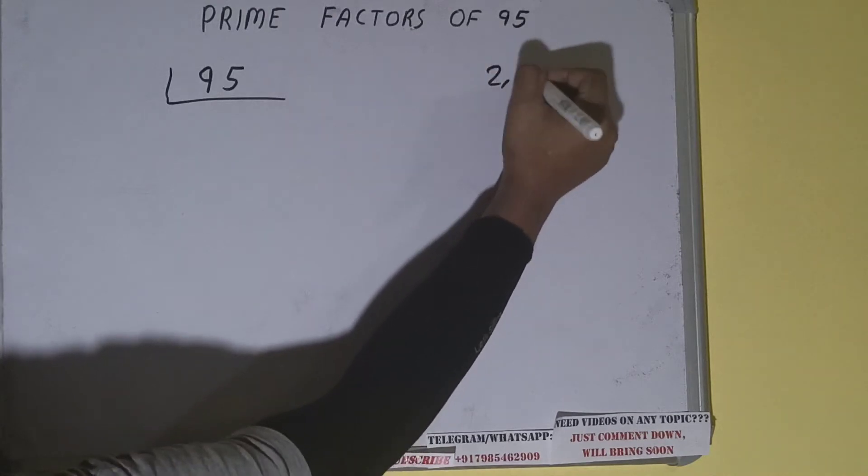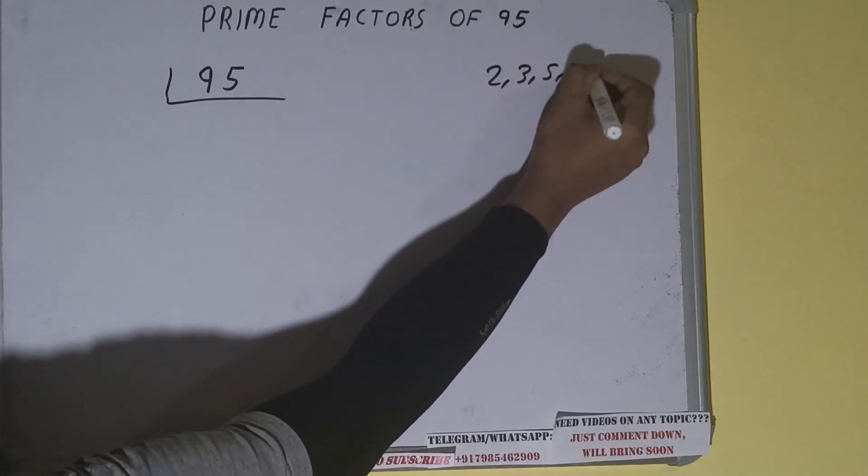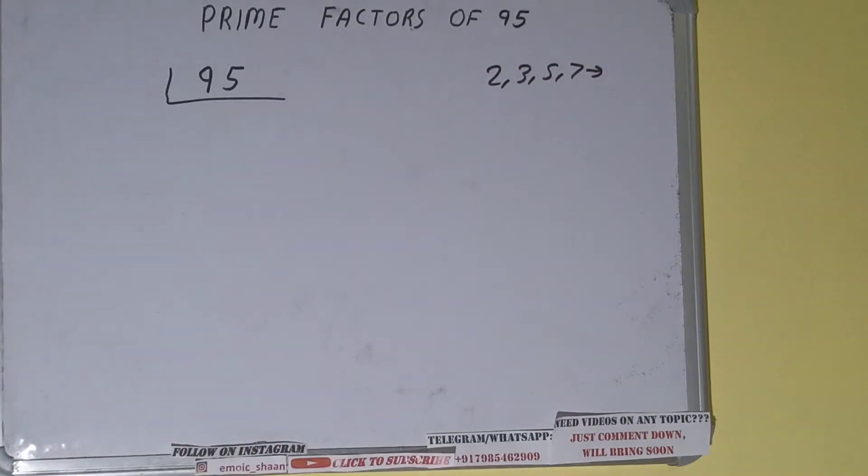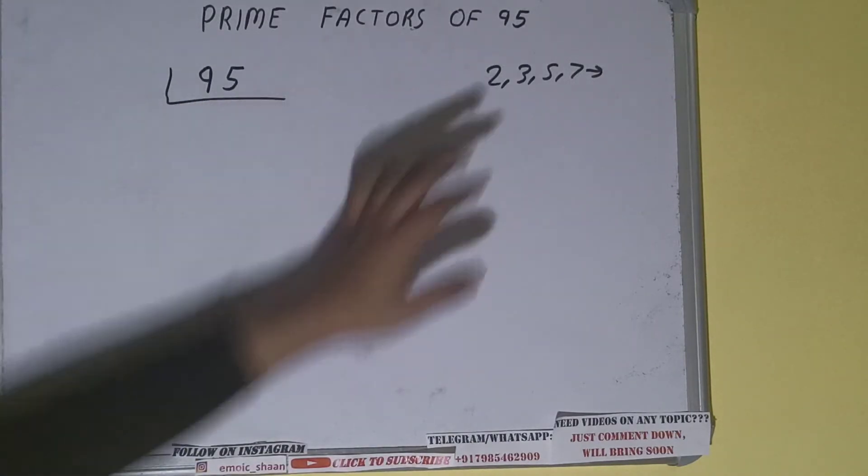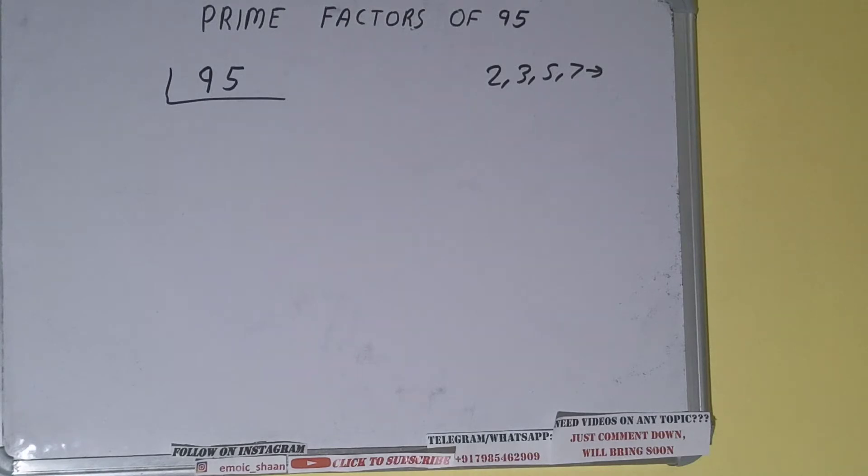Like 2, 3, 5, 7, and so on. All right, so we'll be checking with the lowest prime number we have, that is 2. Is the number 95 divisible by 2? Clearly not, because the number is odd.